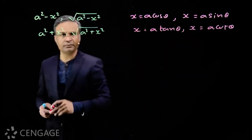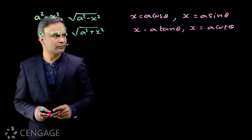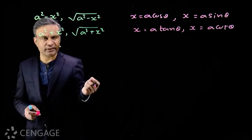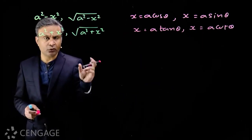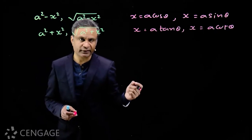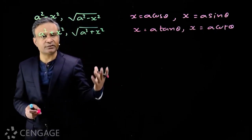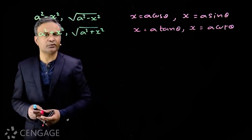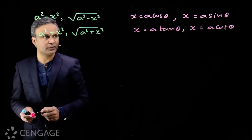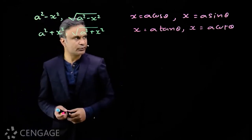Some meaningful expression will be formed. If we put x = a tanθ, we get a² + a² tan²θ. Since 1 + tan²θ = sec²θ, the expression becomes a² sec²θ, the square root of which is a secθ. So obviously, this is the substitution to use.